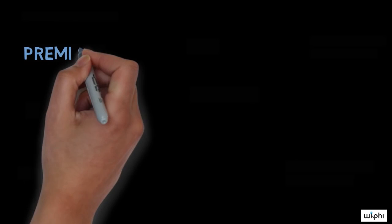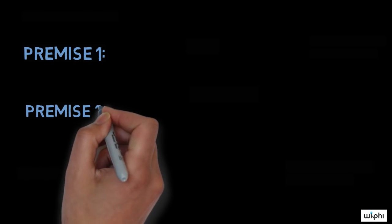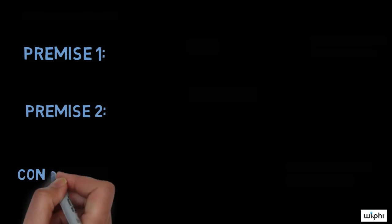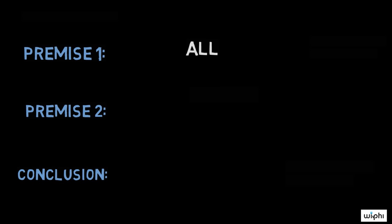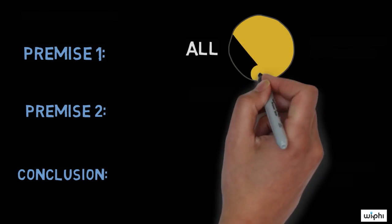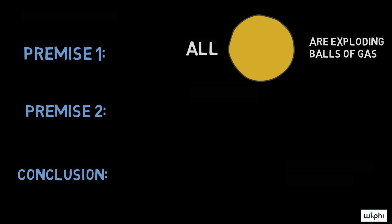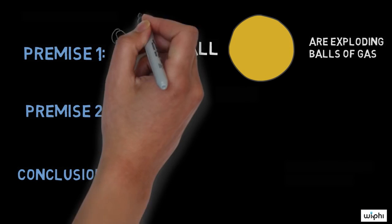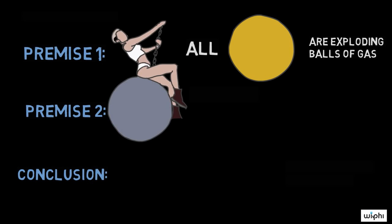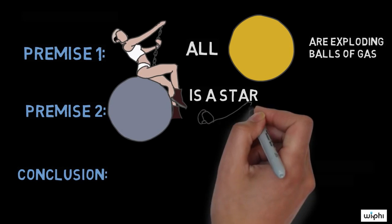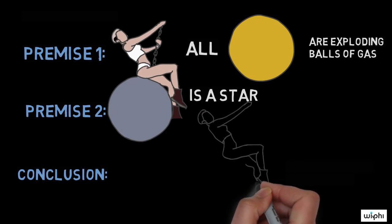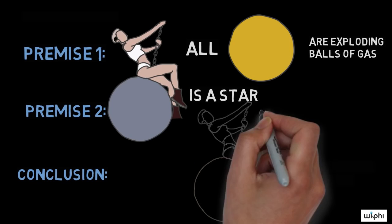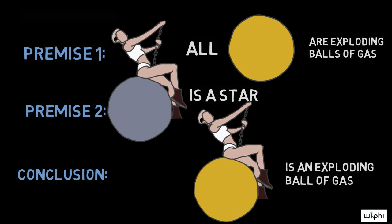Before we look at some more problematic examples, let's start off with a simple one to see how it works. Consider the following argument. Premise 1: all stars are exploding balls of gas. Premise 2: Miley Cyrus is a star. Therefore, Miley Cyrus is an exploding ball of gas.